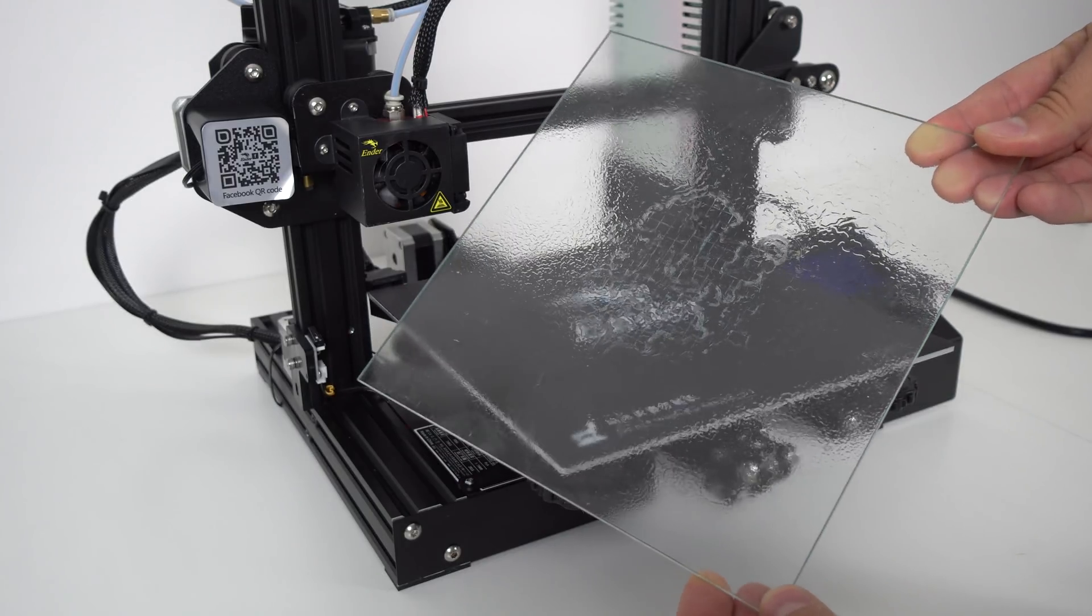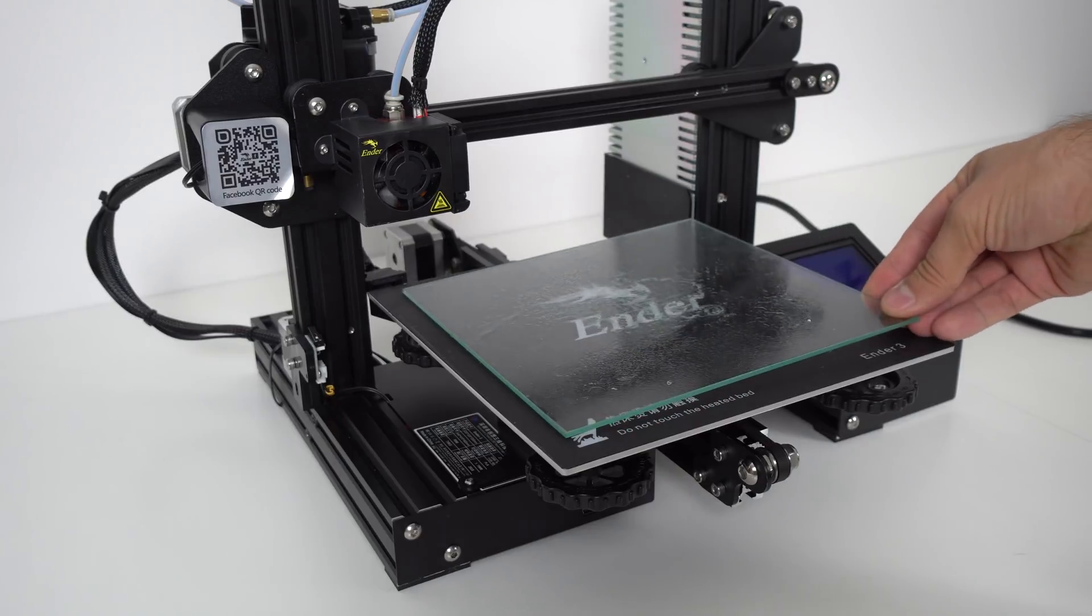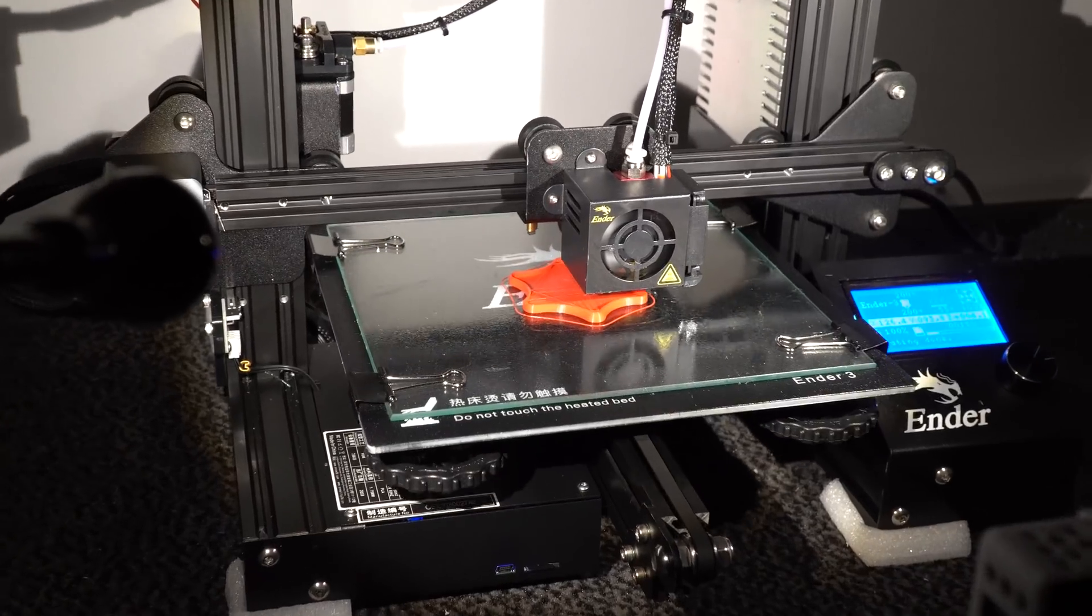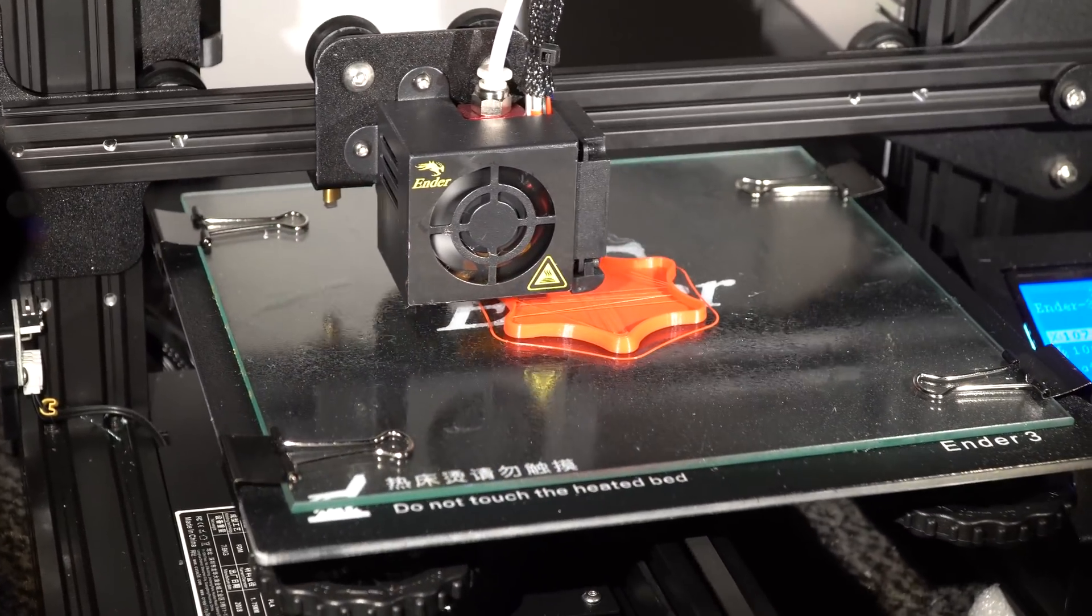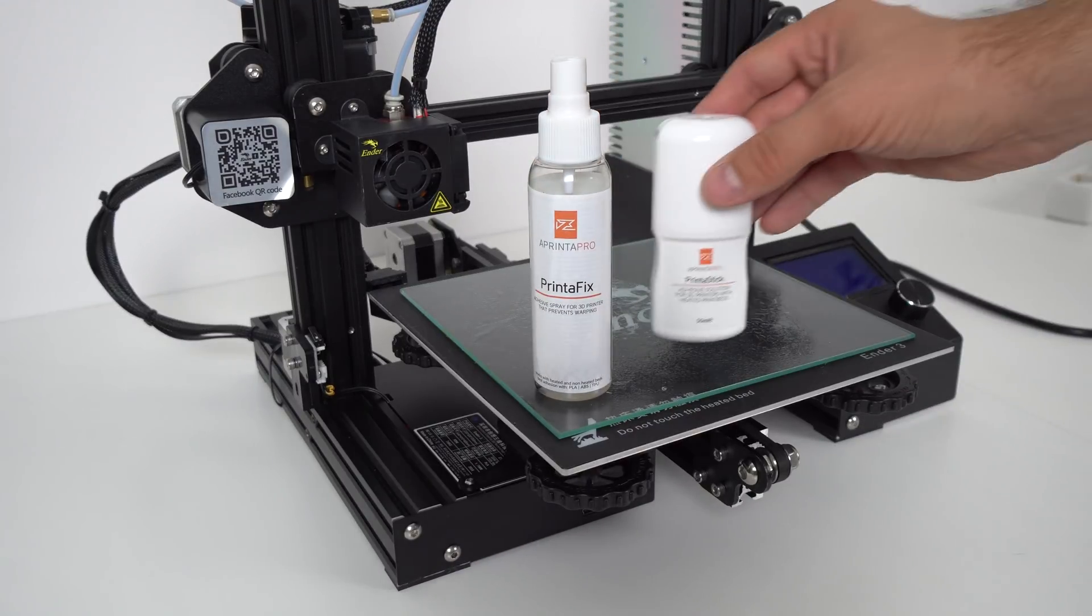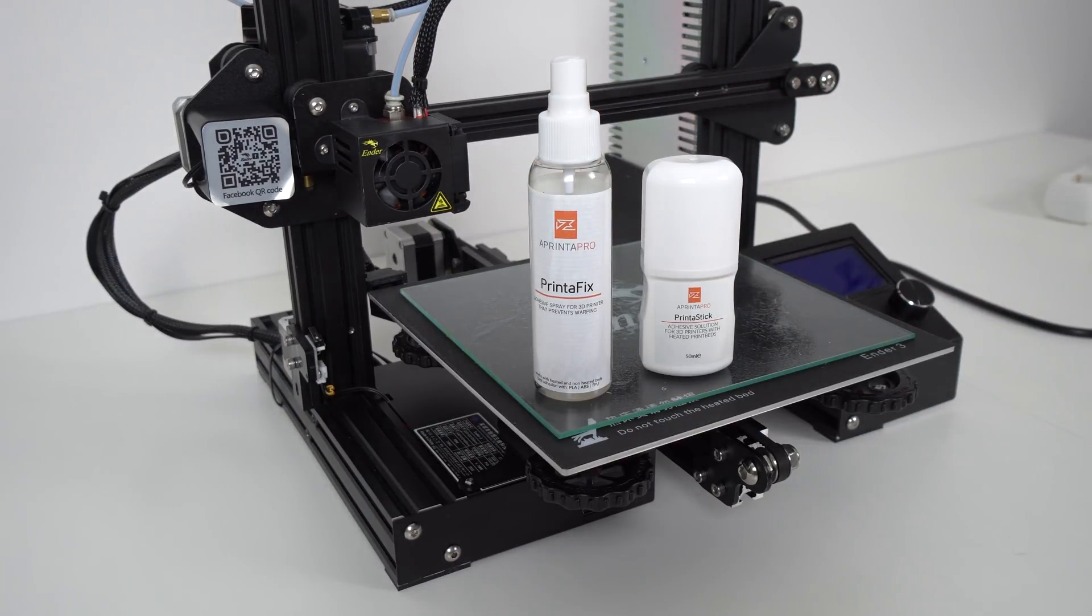Since I like to print on glass surface and it will take some time until I receive my matching glass for Ender 3, I temporarily use this smaller glass from one of my other 3D printers. For helping prints to stick well on the glass I use Print-A-Fix spray or this Print-A-Stick. They work very well.